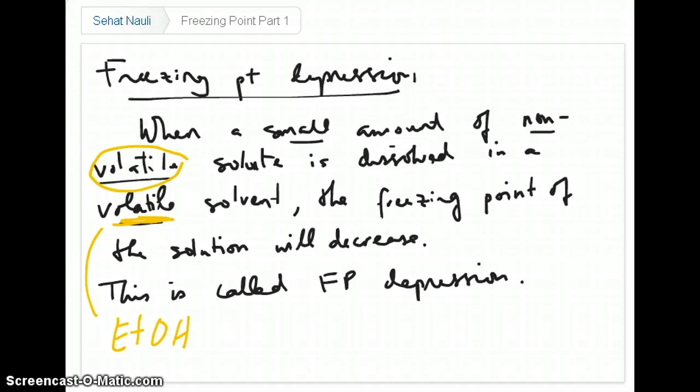If you take a small amount of salt or sugar and dissolve it in water, it turns out that the freezing point of the solution, which is the temperature at which the liquid changes to solid, will actually go down. This is what is referred to as freezing point depression.